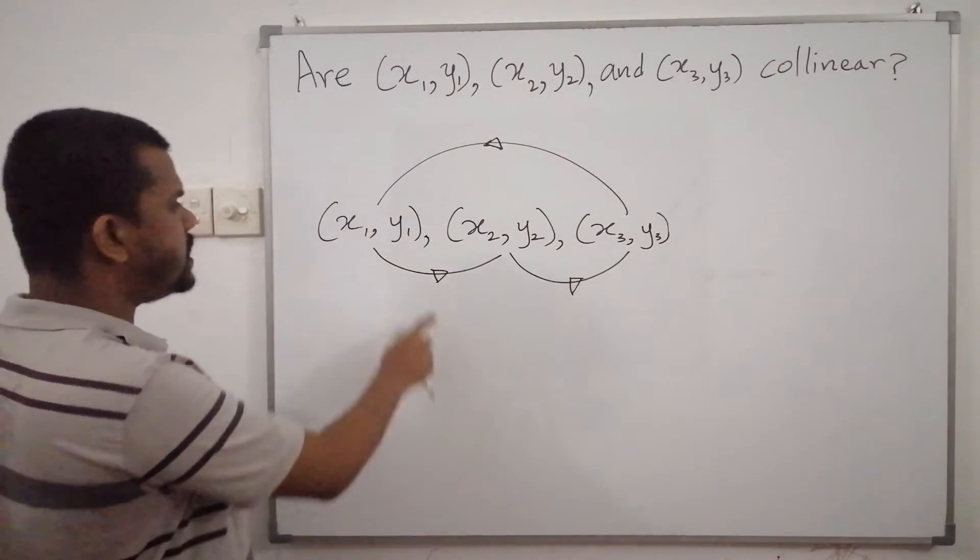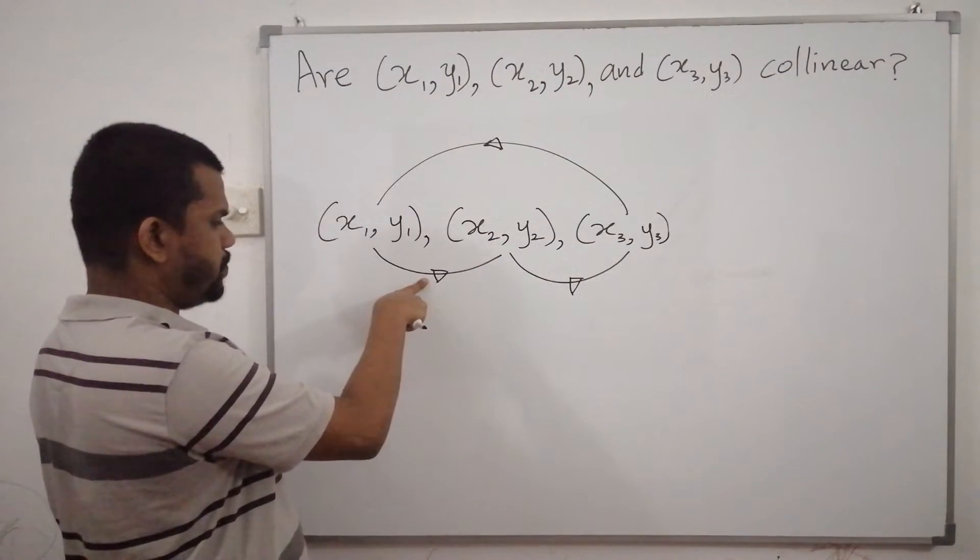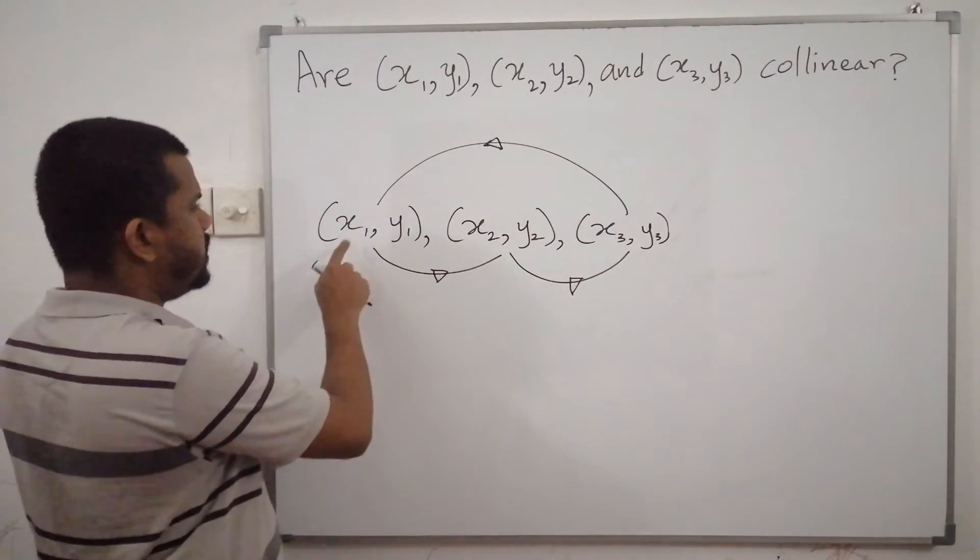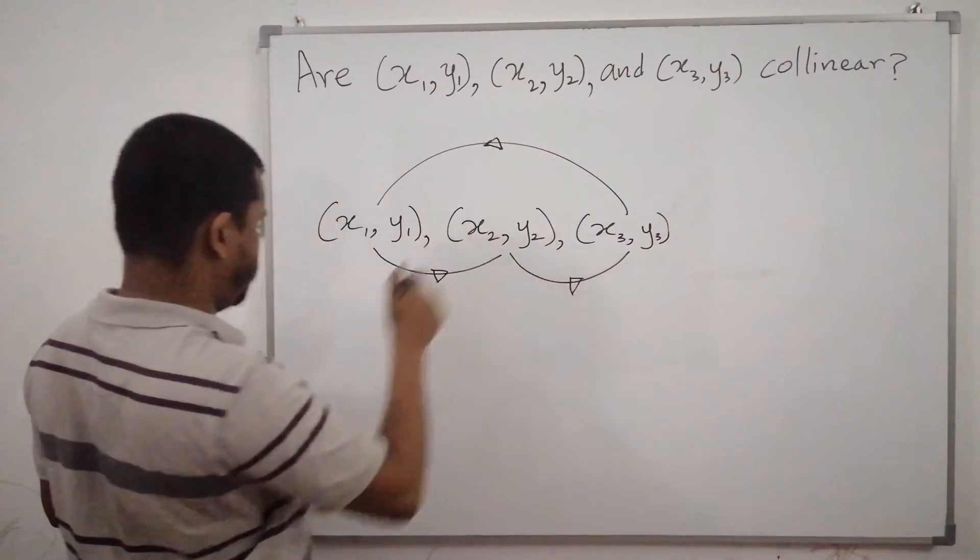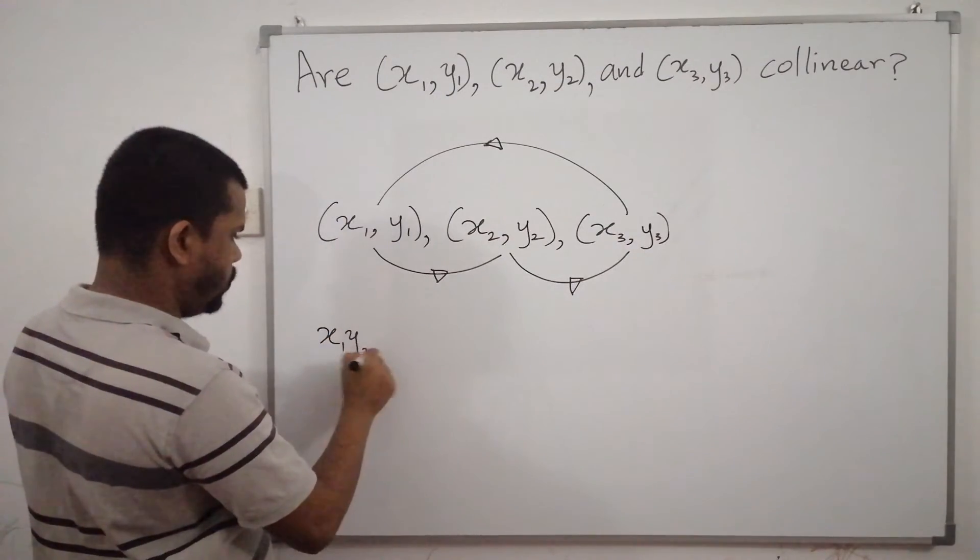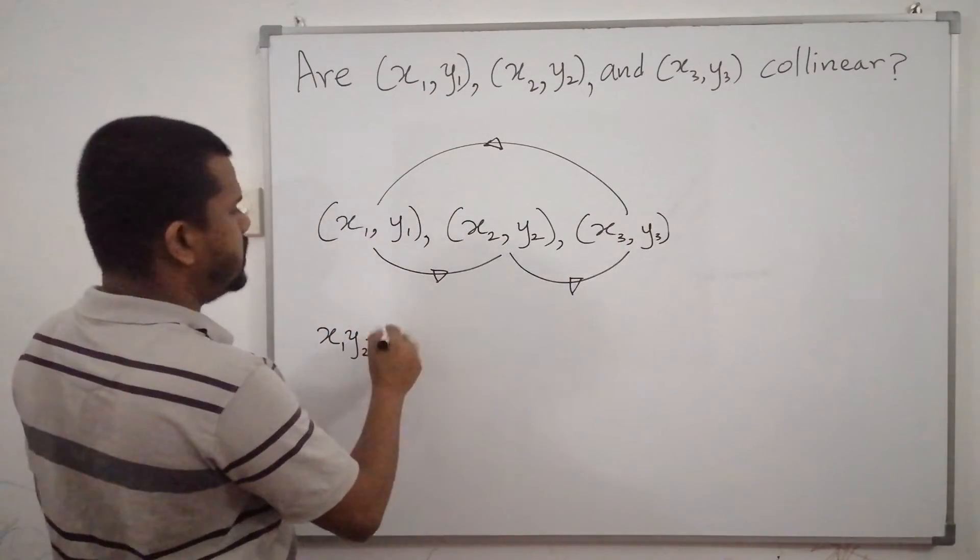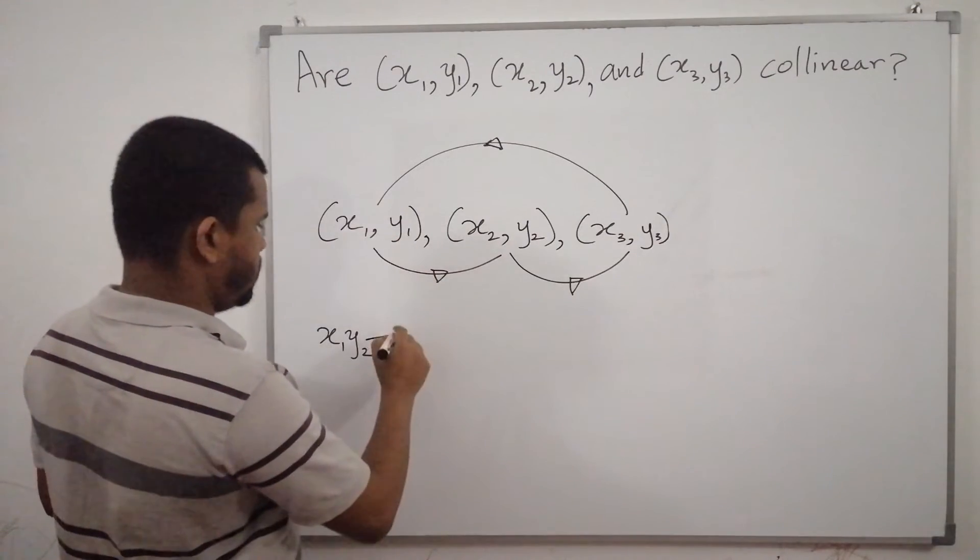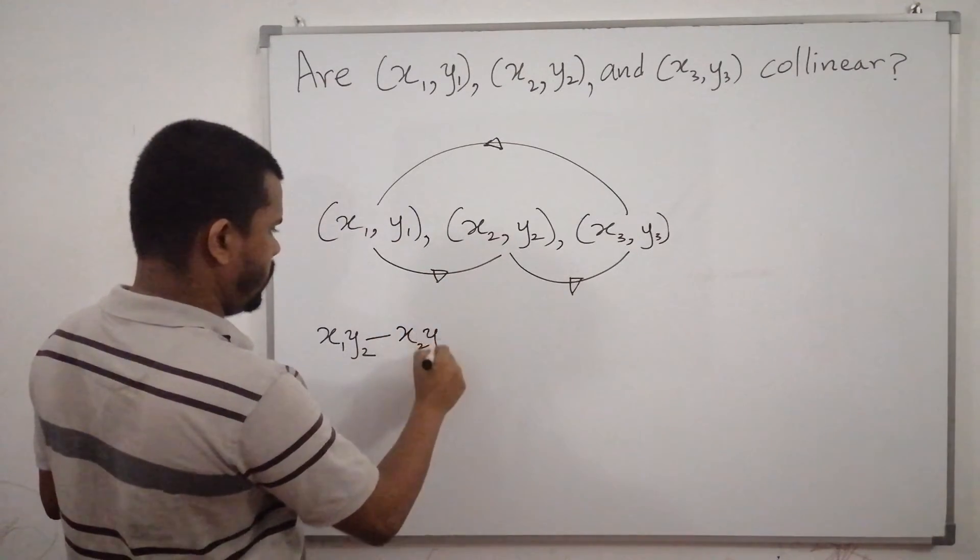If we consider this particular arrow, we can write x1 by 2 minus x2 by 1. You can write down this using this arrow.